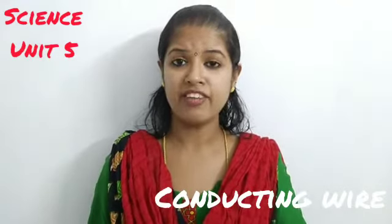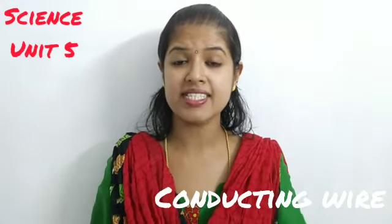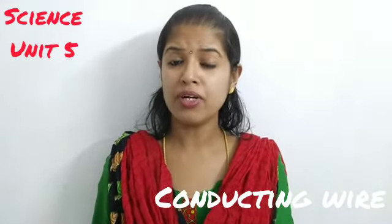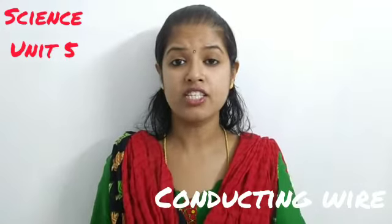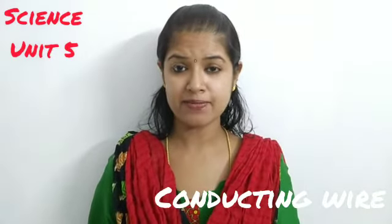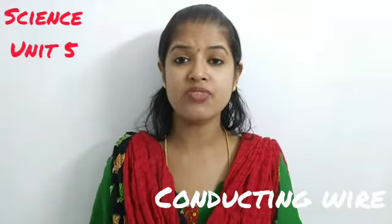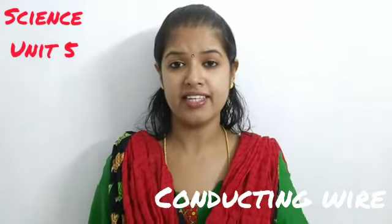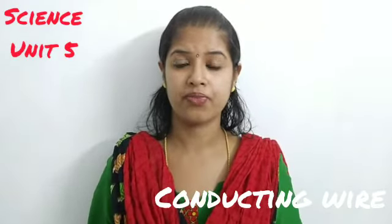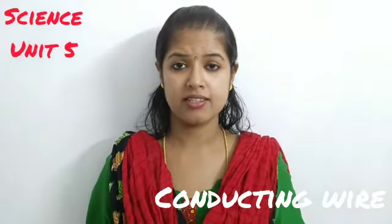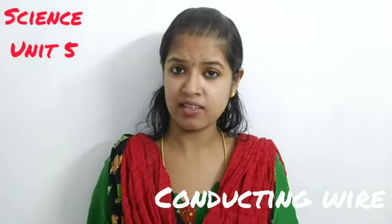Now we are moving on to the connecting wire. From the last class, we learnt that a circuit consists of a bulb and a connecting wire — the purpose of the wire is to allow current to flow. We also need a battery and a switch. These are the things needed for an electric circuit, and we need a conducting wire for the flow of current. There are different types of conducting wires.